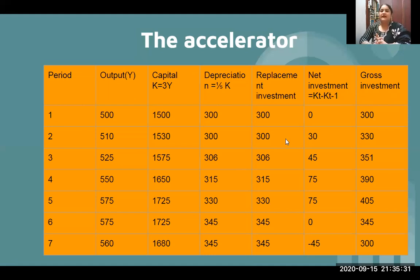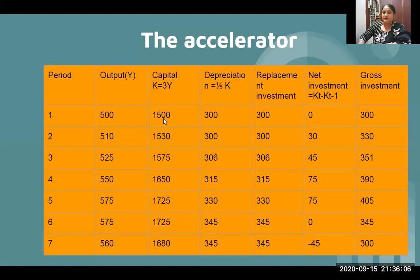Now step by step, let us see how the accelerator works. In the first time period, we assume output is 500. Capital equals three times output, so 500 into 3 equals 1500. Depreciation we initially take as 300. Replacement investment equals 300 since depreciation is 300. Net investment is zero as no new investment has occurred. Gross investment equals replacement investment plus net investment, so 300 plus 0 equals 300.